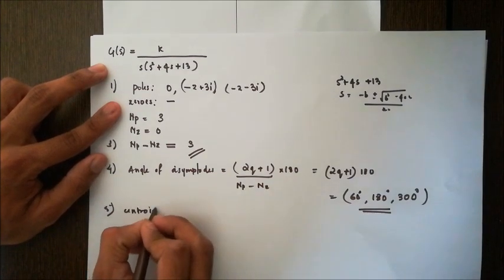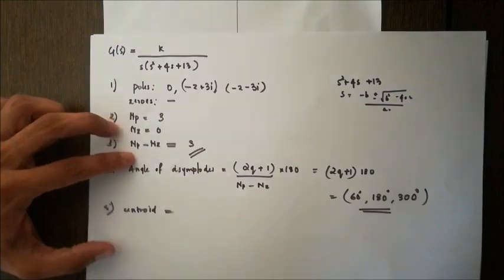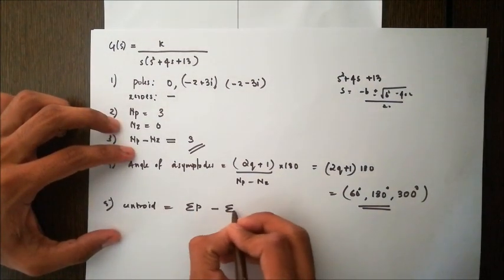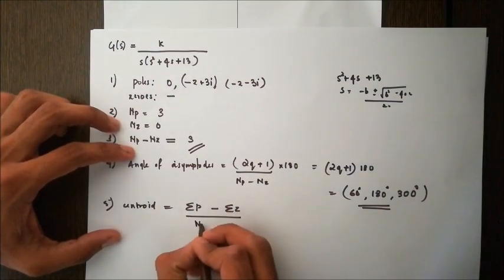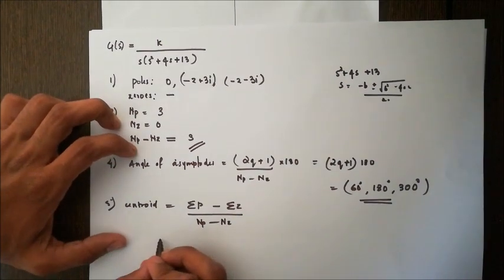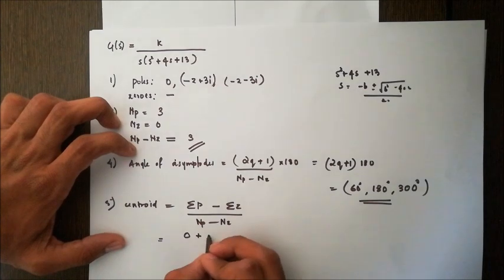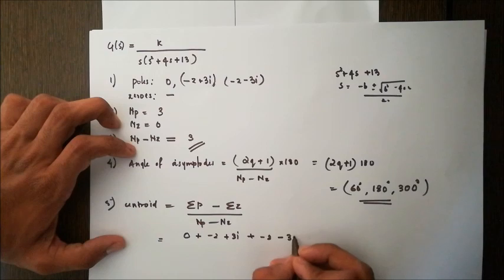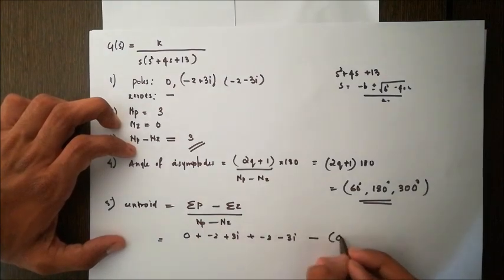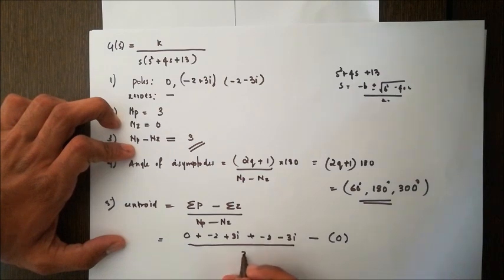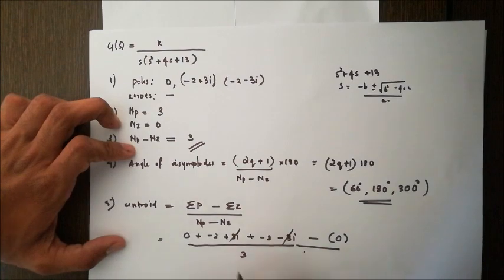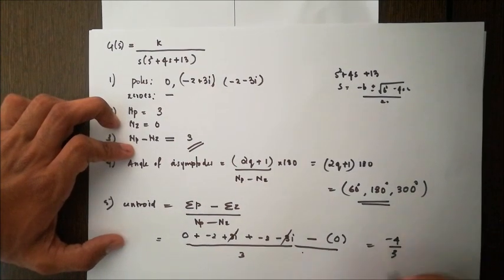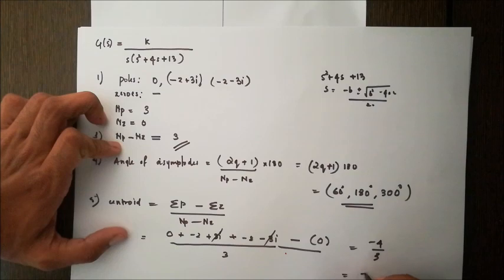Now, where to draw these asymptotes? That is the centroid. The formula for centroid is (Σ poles - Σ zeros) / (Np - Nz). The sum of poles is 0 + (-2 + 3i) + (-2 - 3i) minus 0 for the sum of zeros, divided by 3. The 3i terms cancel, giving -4/3 or -1.33. So the centroid is at (-1.33, 0).